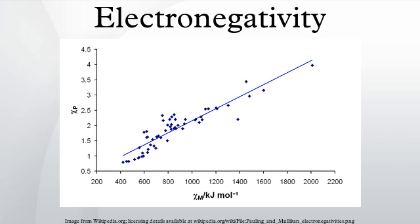Allred-Rochow electronegativity: A. Louis Allred and Eugene G. Rochow considered that electronegativity should be related to the charge experienced by an electron on the surface of an atom — the higher the charge per unit area of atomic surface, the greater the tendency of that atom to attract electrons. The effect of nuclear charge Z_eff experienced by valence electrons can be estimated using Slater's rules, while the surface area of an atom in a molecule can be taken to be proportional to the square of the covalent radius, r_cov. When r_cov is expressed in picometers, this gives the Allred-Rochow electronegativity.